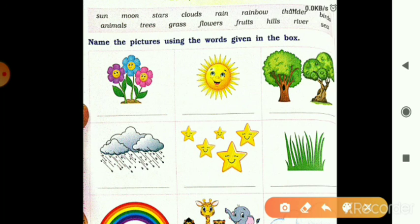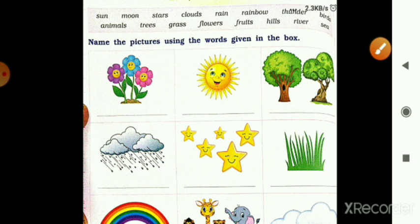So first me kya hai? To flowers, to aapko yahan pe likhna hai flowers. Aise. Phir sun, then tree.